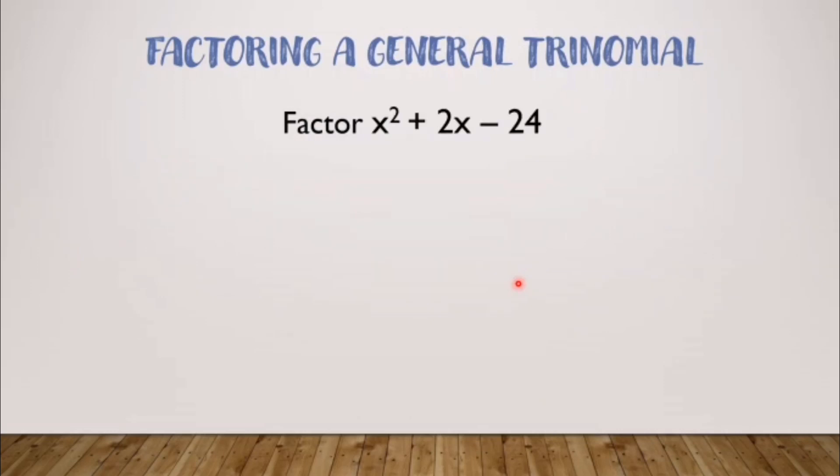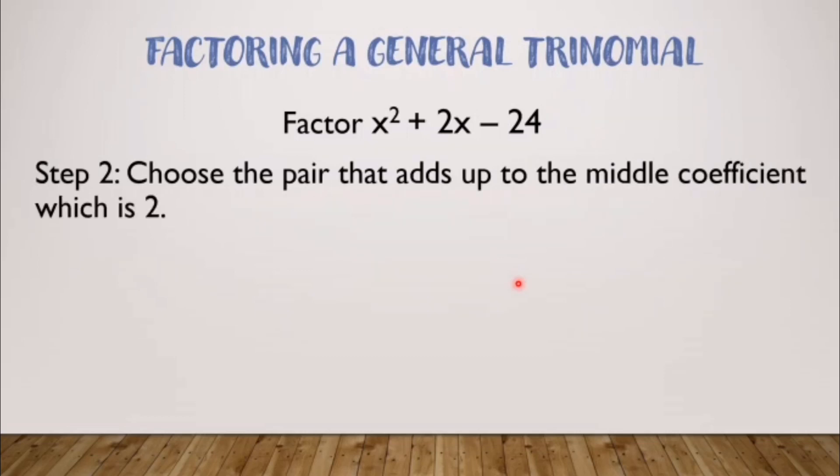After listing down, we've listed them all. In step 2, we'll choose the pair from those we listed that when added, the answer is 2, which is the middle term. Let's choose from these pairs. Negative 1 plus 24 is 23. 1 plus negative 24 is negative 23. So technically, these aren't included. Negative 2 plus 12 is 10. 2 plus negative 12 is negative 10. So these aren't included either. Negative 3 plus 8 is 5. 3 plus negative 8 is negative 5. So these aren't included. This one: negative 4 plus 6 is 2. Right? And 4 plus negative 6 is negative 2. So which one gave us positive 2? We have negative 4 and 6.